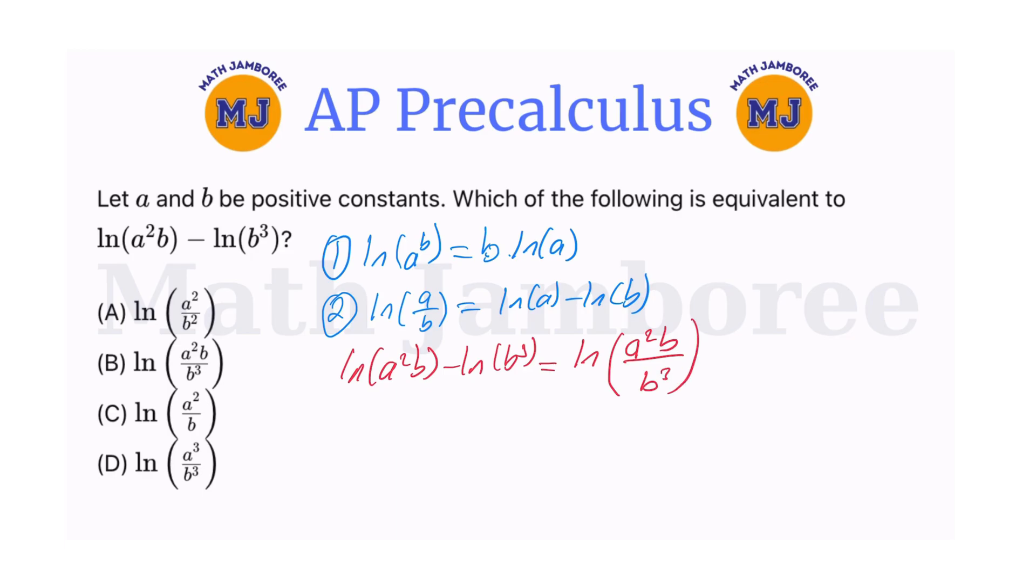So this b and b cubed cancel each other out, and there is b squared left in the bottom. This becomes natural logarithm of a squared over b squared.